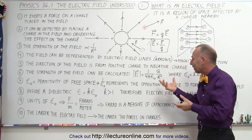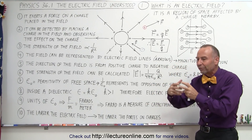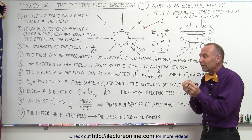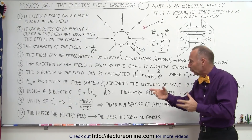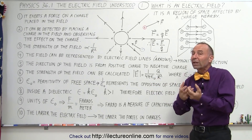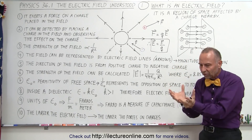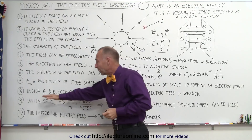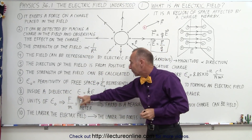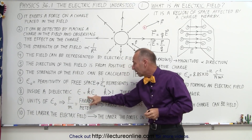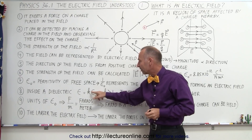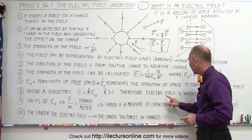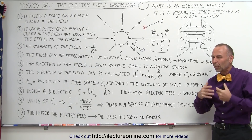Free space out there has a certain permittivity — or opposition to forming an electric field — and if you are in a different location where this value is different, you have a different strength electric field. There seems to be some relationship between the properties of space and how strong an electric field can be formed by placing charge in free space. When you're inside a dielectric material, the permittivity inside the dielectric is some constant k times epsilon sub naught, the permittivity of free space. Since k is always greater than one if you're not in free space, this is a bigger number, and therefore the electric field is weaker inside the dielectric material.